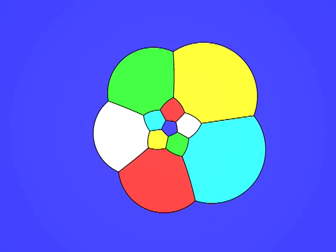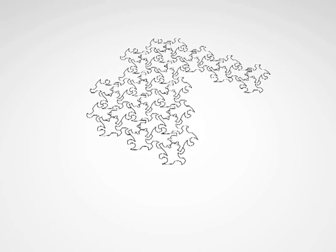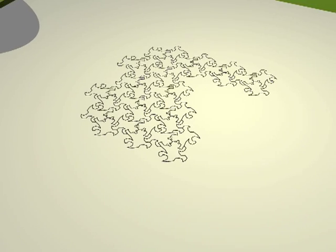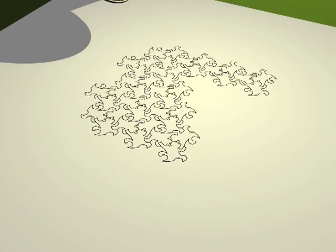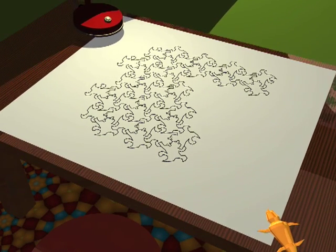These five solids have always fascinated geometers. The Greek philosophers attributed a magical importance to them by associating one of the fundamental elements from which the world is formed to each of them. We call these figures the platonic solids.